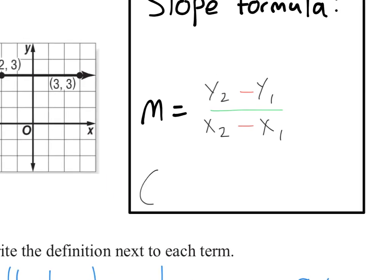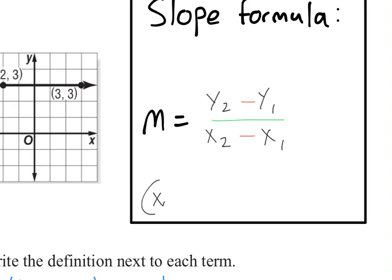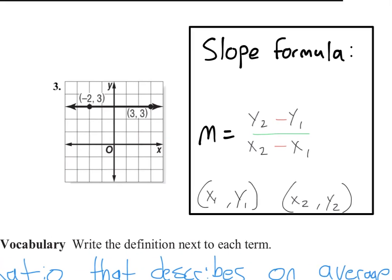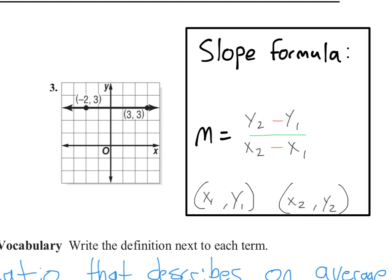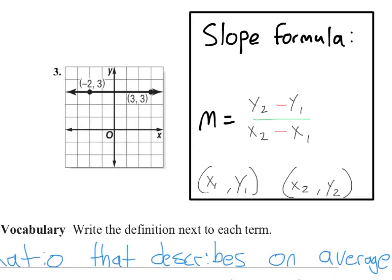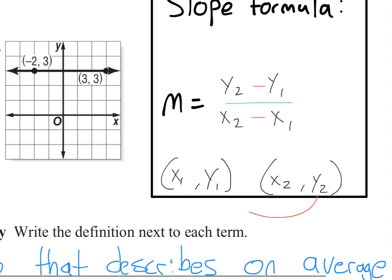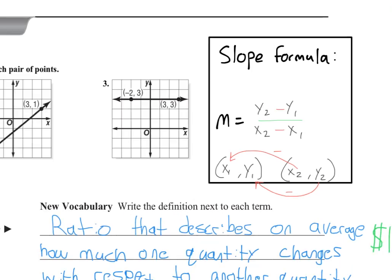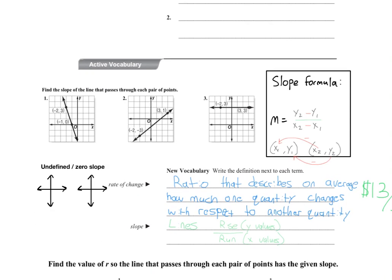And so what those stand for is it's going to help us talk about two coordinate points. And so what those smaller ones and twos are is describing which x and which y coordinate we're talking about. Because we're going to have two coordinate points, and we'll take one y coordinate and subtract the other, and we'll do one x coordinate and subtract the other, and turn it into the ratio for the fraction.